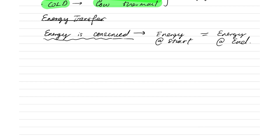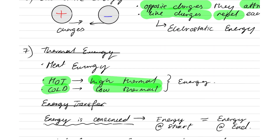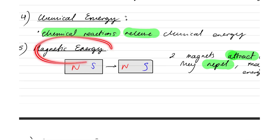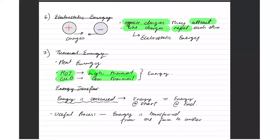Now let's look at the different types of energy transfers. Whenever you have a process and you want the process to be useful, a useful process requires that energy is transferred from one form to another. These are the different types of energy stores: thermal energy, electrostatic energy, magnetic energy, chemical energy. These are all different types of energy stores.